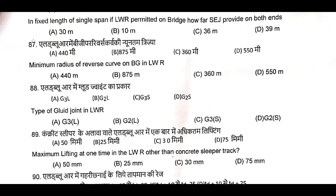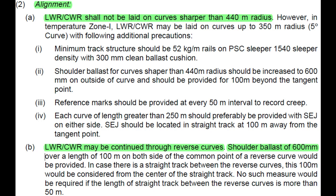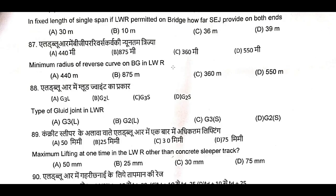Question Number 87: Minimum radius of reverse curve in LWR — 440 meters. Question Number 87, A is the correct answer: 440 meters.